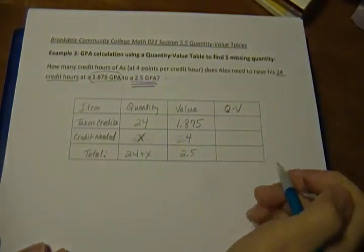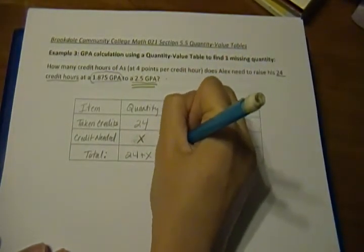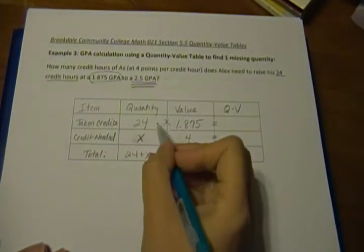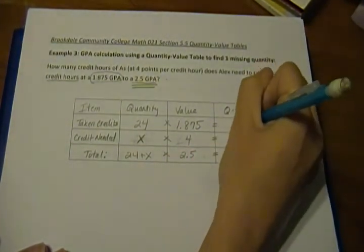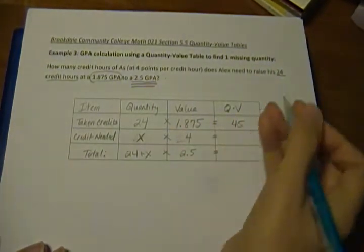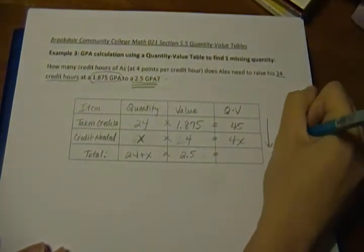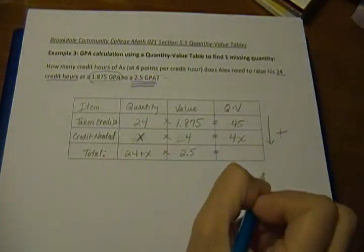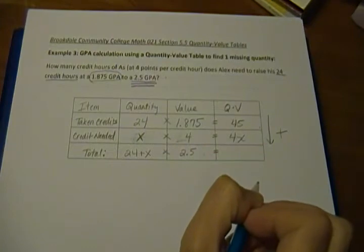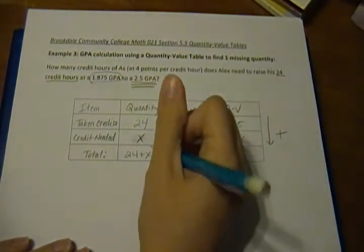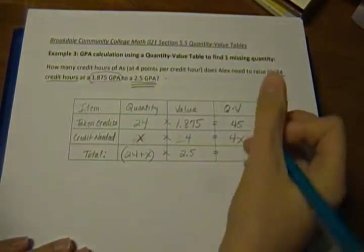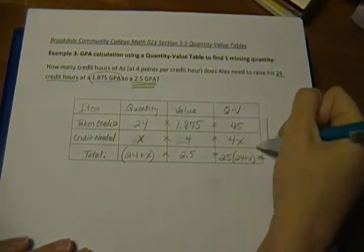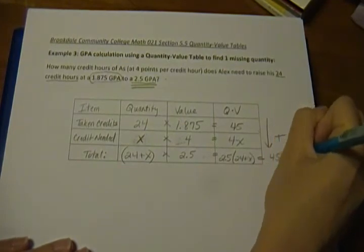Now what we can do is do our multiplication across our Q times V to find out what goes in our QV column. So 24 times 1.875 is 45, and then X times 4 is just 4X. Now, this box here is going to give us our equation that we need to solve algebraically to find out how many credit hours Alex needs. So it's going to be the 24 plus X times the 2.5, which we can write like this, is going to equal the sum of this column, which is going to be the 45 plus the 4X.